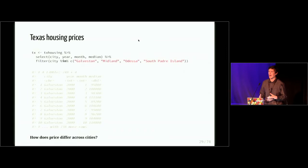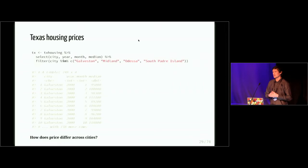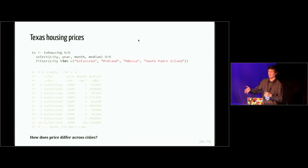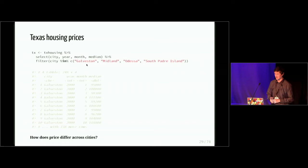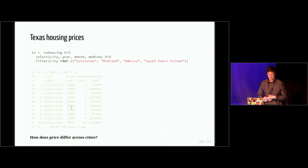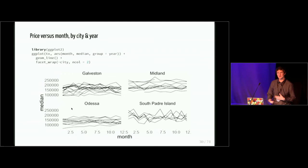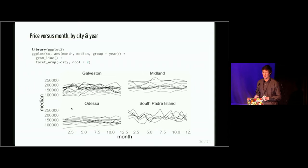I want to walk through another example showing how this framework can be used in another way. We've seen how to use highlight_key() and highlight() to essentially tell plotly that when I do a specific interaction, I want to query rows of my data according to some column. I'm going to take the same txhousing data, focus on four variables of interest, and filter down to just four cities. I want to ask the pretty vague question: how does price differ across cities?